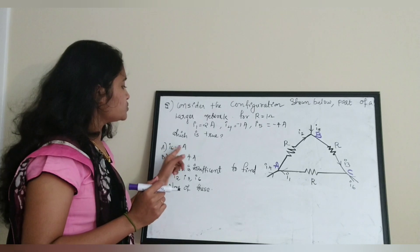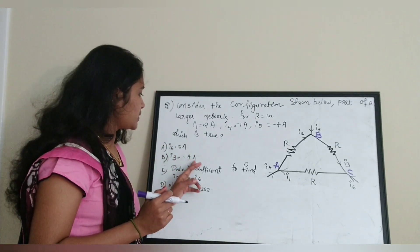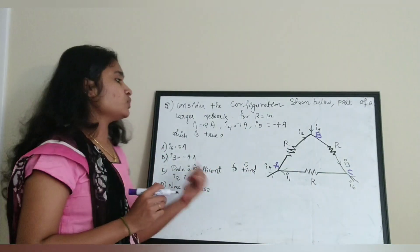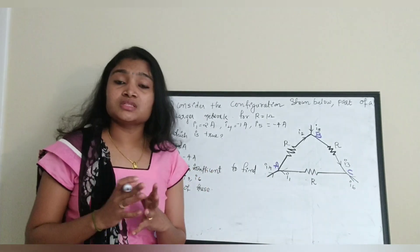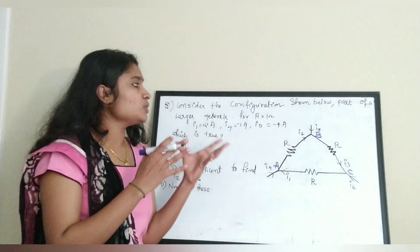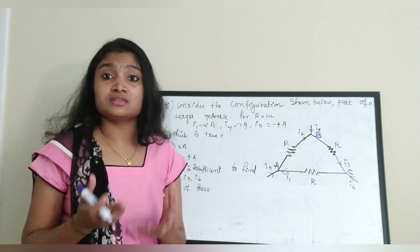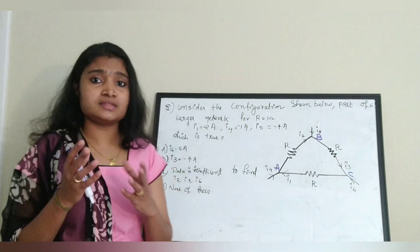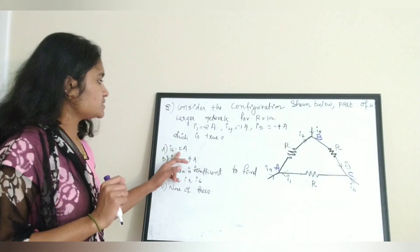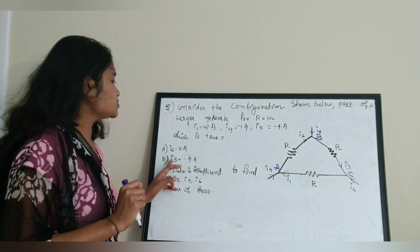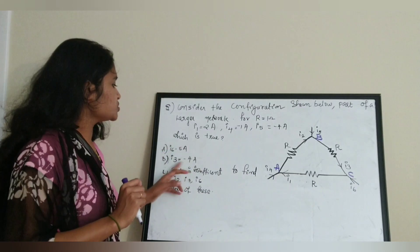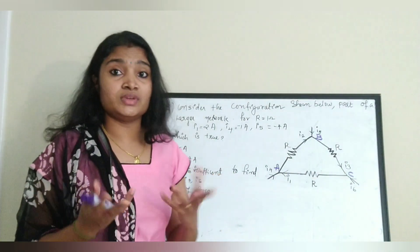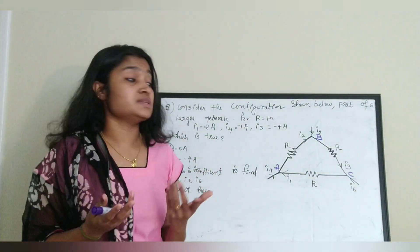Option A: I6 = 5 Ampere. Option B: I3 = −4 Ampere. Option C: Data is insufficient to find I2, I3, and I6. Option D: None of these. Since the question talks about currents, we can identify it as a KCL (Kirchhoff's Current Law) problem. We don't yet know the values of I3 and I6, so we cannot say whether options A or B are correct without solving.